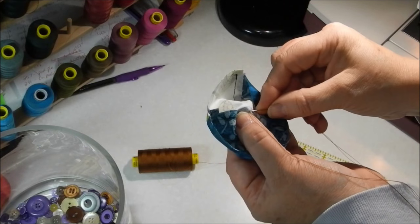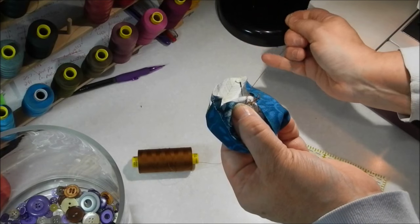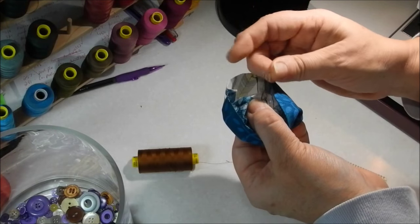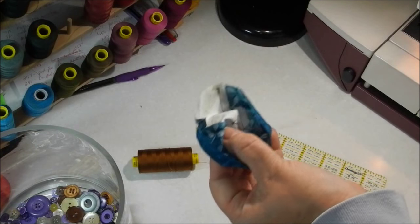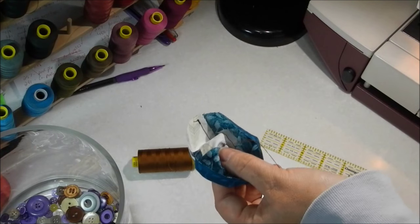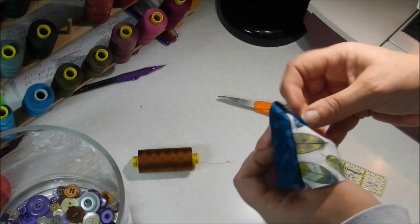I'm just going to tack two or three little stitches here to hold it in place. And then to knot it, I'm just going to make a loop. I'm going to go through that loop and pull it to make my knot.